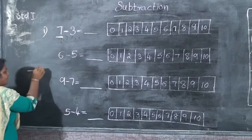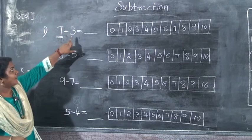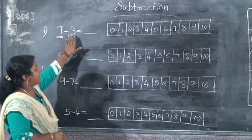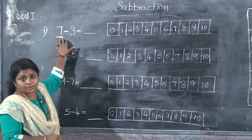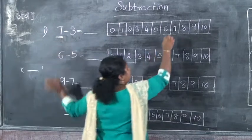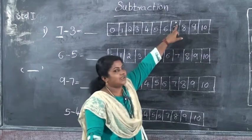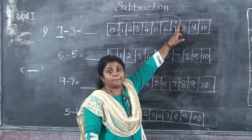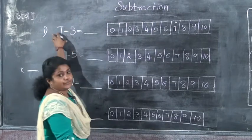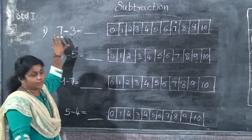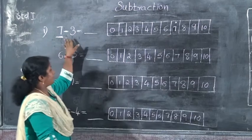Remember the subtraction sign — the minus sign. I have put here minus and the small number 3. So the question is 7 minus 3. How we can subtract using this number strip? Which is the biggest number? 7. So we have to put a dot on 7. We have to put a dot at the big number, which is the first number. And here you can see 7 minus 3.